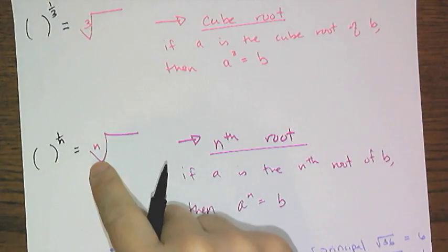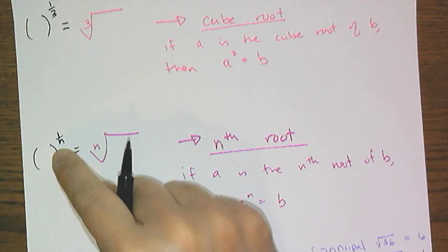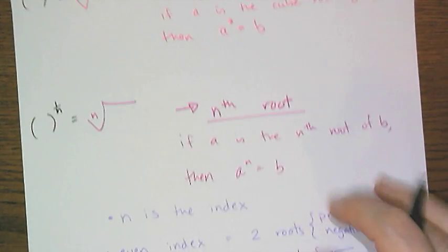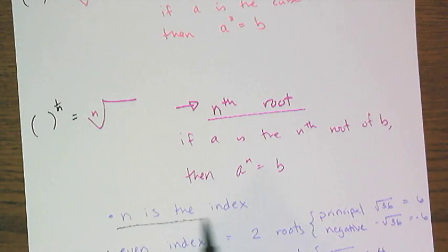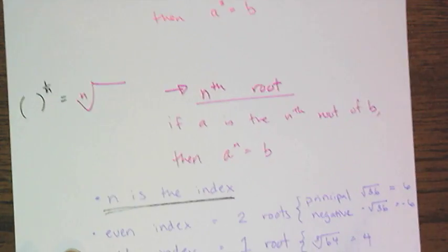So any radical, if I want to write it as an exponent, is basically a fractional exponent. We call that n the index of the radical.